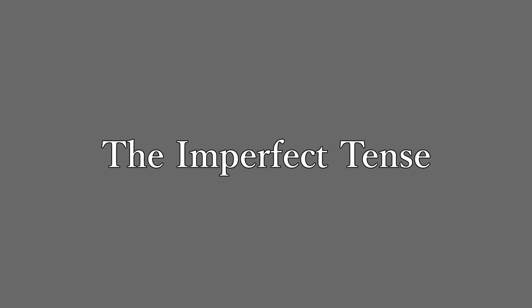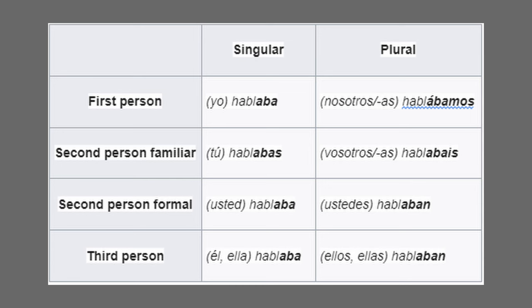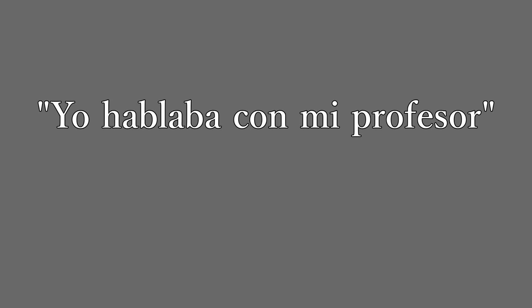Next up, we have the imperfect tense. This describes events that were ongoing in the past — like the difference between 'I used to be' and 'I was.' Using the verb hablar: yo hablaba (I was speaking), tú hablabas (you were speaking), usted hablaba (you were speaking formally), él/ella hablaba (he/she was speaking), nosotros hablábamos (we were speaking), vosotros hablabais (you all were speaking), ustedes hablaban (you all were speaking), ellos/ellas hablaban (they were speaking). An example: yo hablaba con mi profesor — I was talking with my teacher.